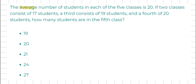The average number of students in each of the five classes is 20. If two of the classes consist of 17 students, a third consists of 19 students, and a fourth consists of 20 students, how many students are in the fifth class?